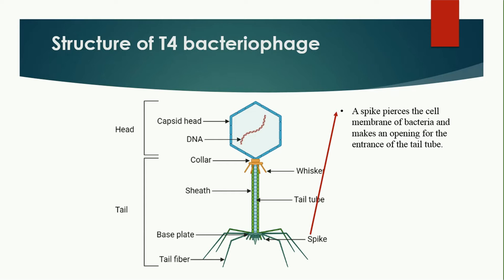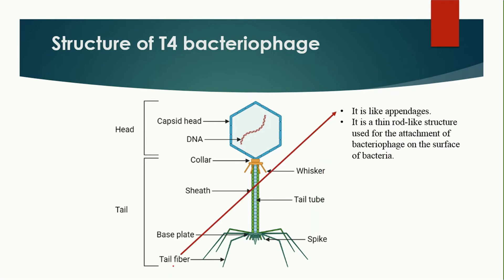The spike pierces the cell membrane of the bacteria and makes an opening for the entrance of the tail tube — like an injection penetrating into the bacterial cell membrane to help passage of DNA. The tail fibers are thin, rod-like appendages, similar to the legs of a spider, and their purpose is to help attach the bacteriophage to the surface of the bacteria.